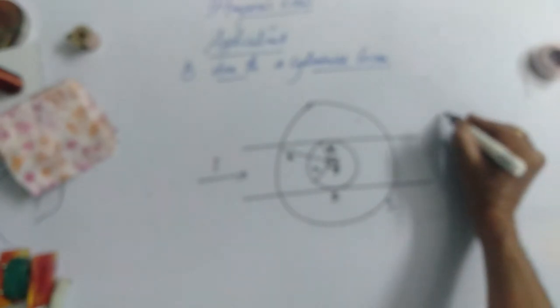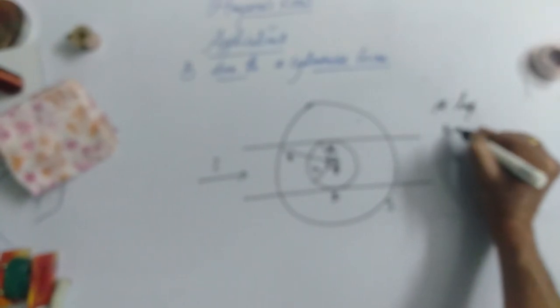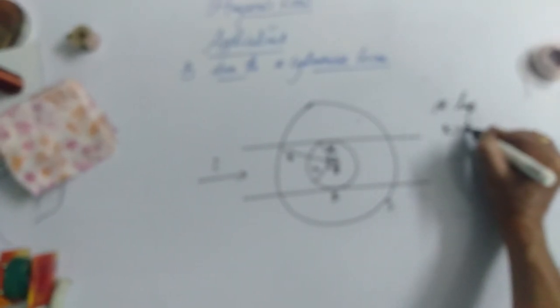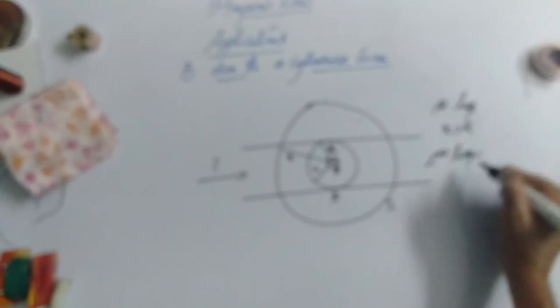The Amperian Loop radius be R. So in first loop, R is greater than capital R. In second loop, R is equal to R. And in third loop which is inner loop, R is less than R.